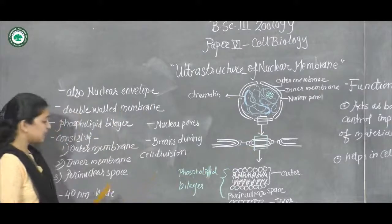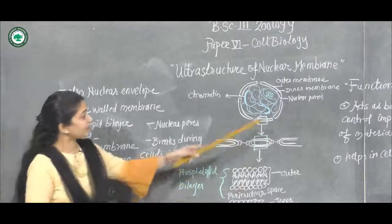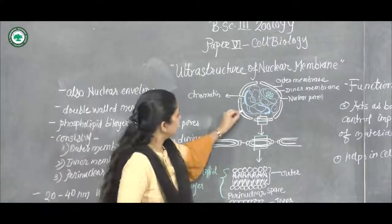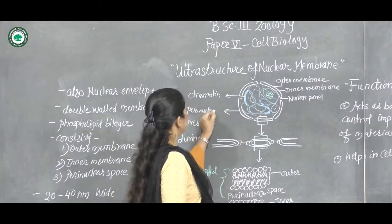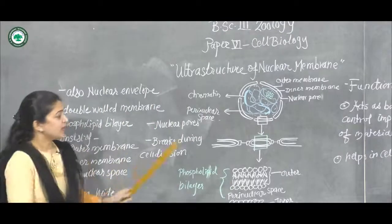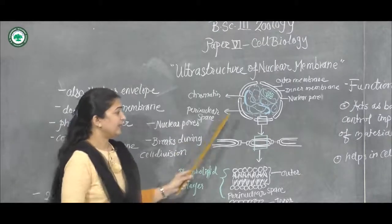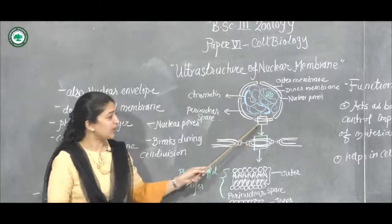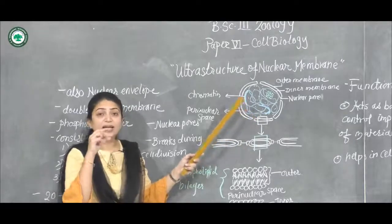The space present between the outer membrane and the inner membrane is called the perinuclear space. That region contains some gelatinous fluid to maintain the phospholipid bilayer membrane. I have shown in the box the section of what is present in that single double-walled membrane.